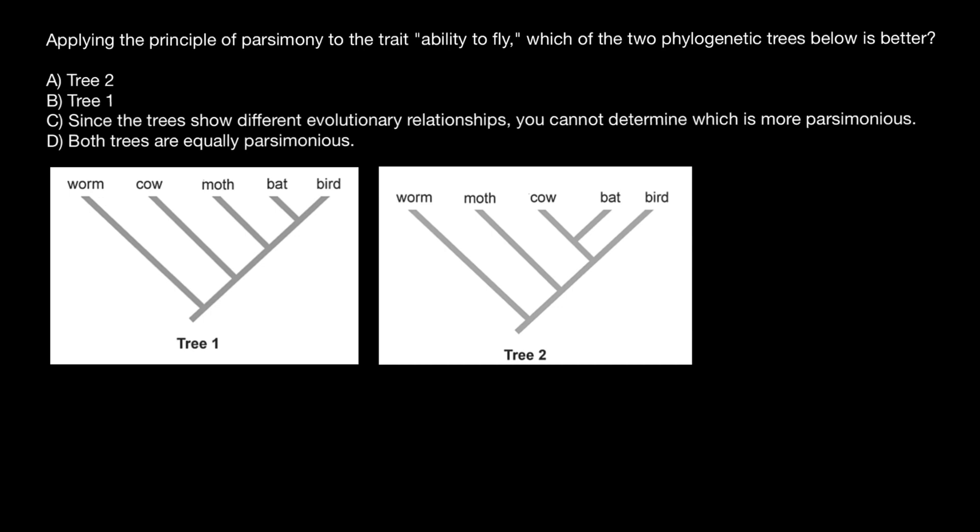Hello, and welcome to Nikolai's Genetics lessons. Today's question is: applying the principle of parsimony to the trait ability to fly, which of the two phylogenetic trees below is better?